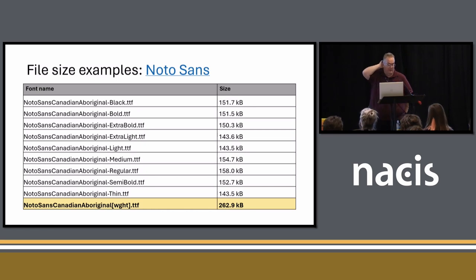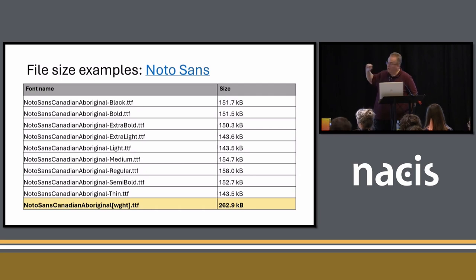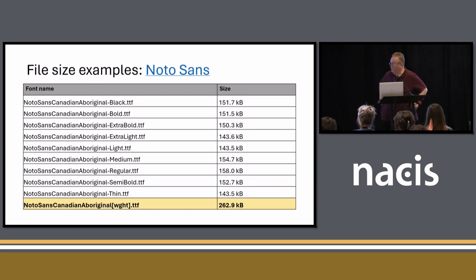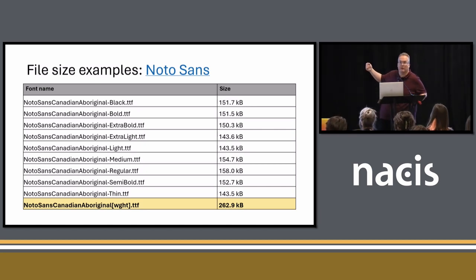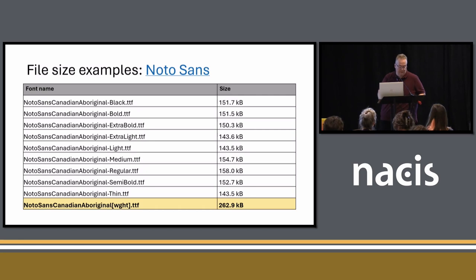I want to talk about file size and the advantages. Here's an example of one of the Noto Sans fonts. The weighted variable version is larger at 262 kilobytes, but if you were making a map or a web page with just regular and bold, it's still smaller than two separate static font files combined. And if you were to use more of these weights, you save even more on size.